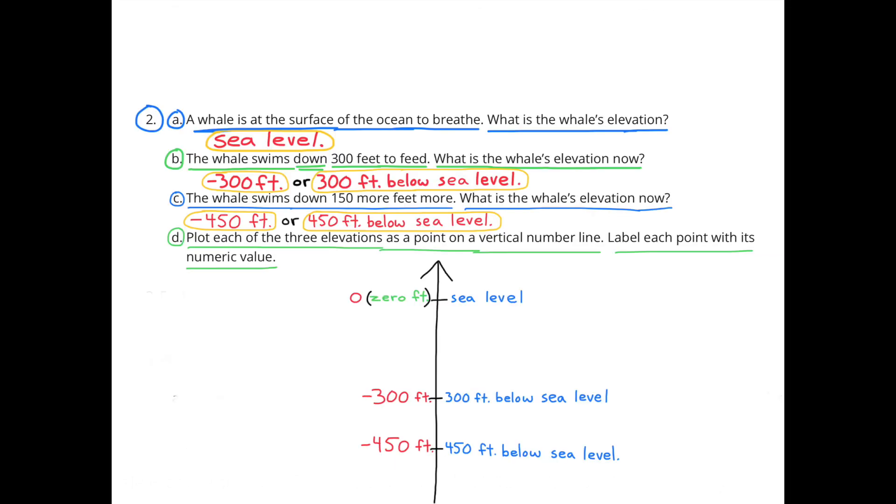Number 2. A. A whale is at the surface of the ocean to breathe. What is the whale's elevation? The whale's elevation is sea level. B. The whale swims down 300 feet to feed. What is the whale's elevation now? Well, he went down 300 feet from sea level. So that's like going from 0 down 300 feet. So that would be negative 300 feet or 300 feet below sea level.